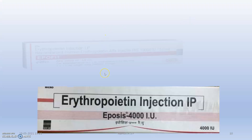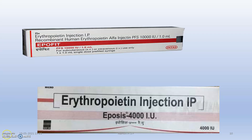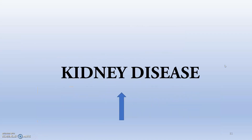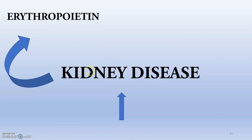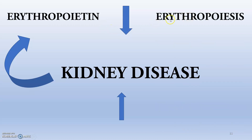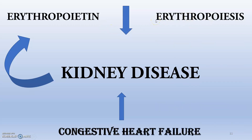Erythropoietin injections are available as a treatment. Whenever kidney disease is present, erythropoietin will be secreted in very low amounts, so erythropoiesis will be reduced. Additionally, whenever there is congestive heart failure, kidney diseases are very common. In that case, erythropoietin secreted will be very less, leading to less erythropoiesis and ultimately anemia.